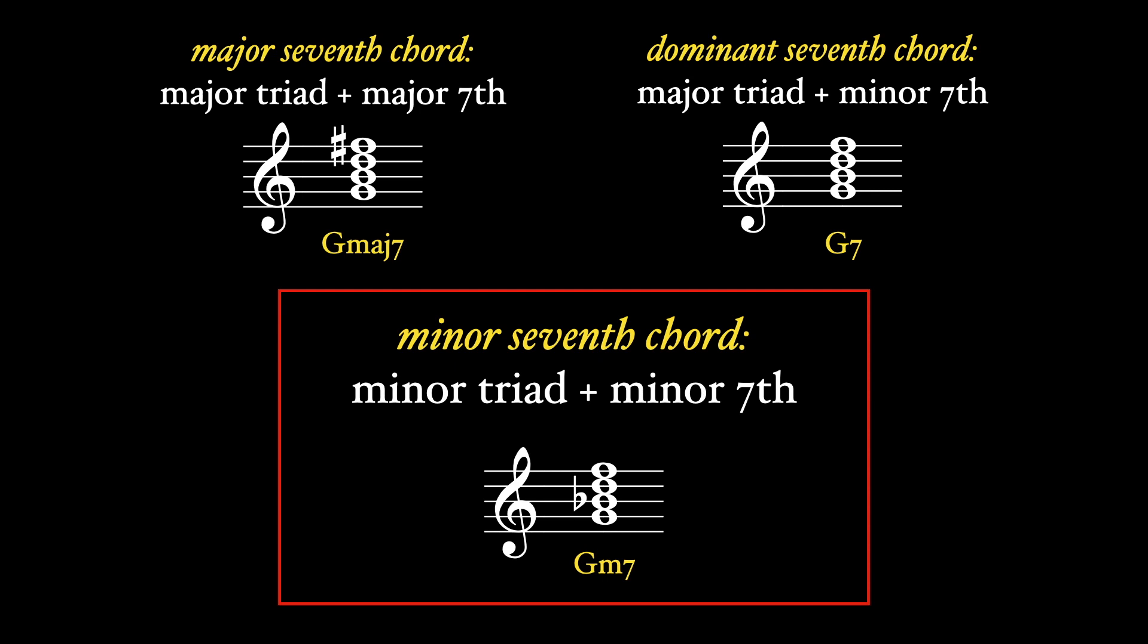This is the only common seventh chord with a minor triad at its base. In lead sheet notation, we write a lowercase m followed by a seven. Jazz scores sometimes use a minus sign instead of the little m.